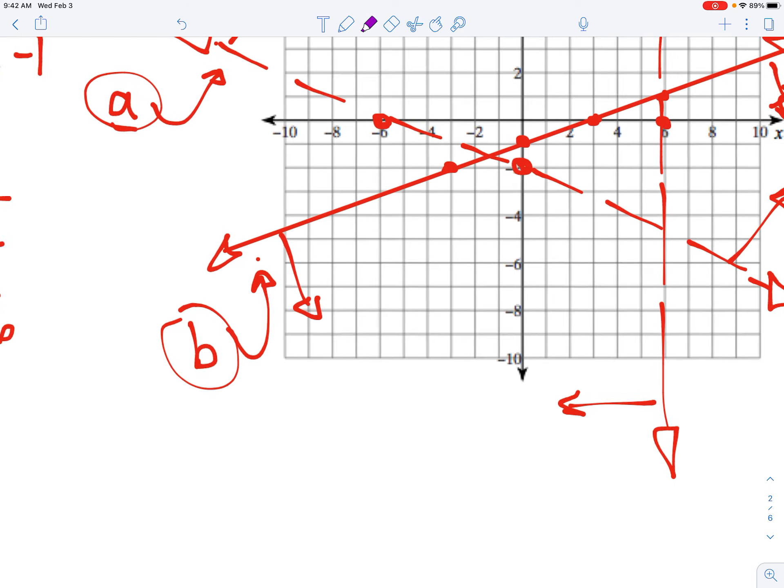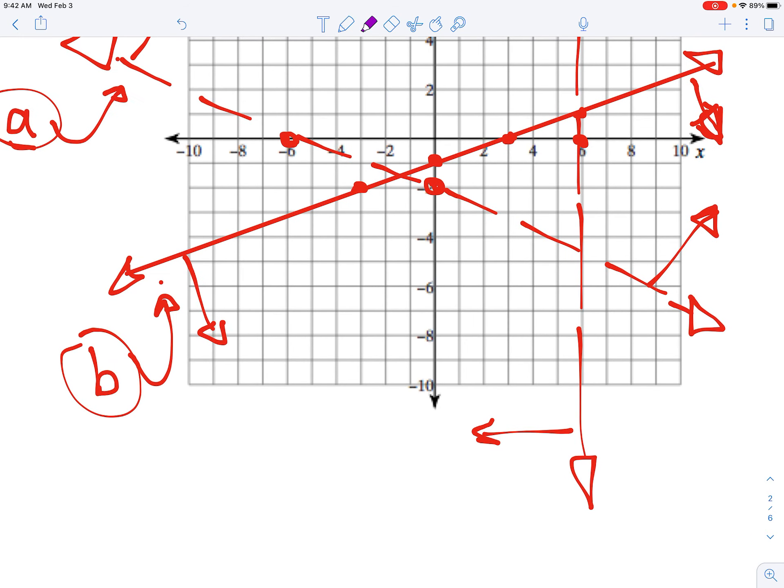I have my feasible region. It is this triangle. And now let's make sure we know the vertex points of that triangle. Three of them. Here, here, and here.